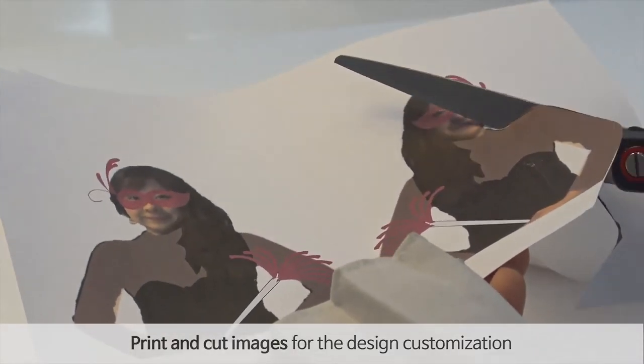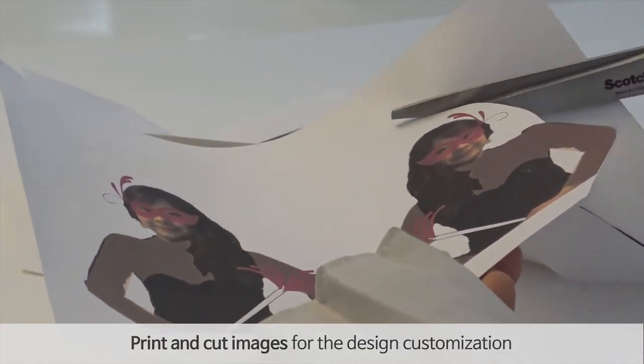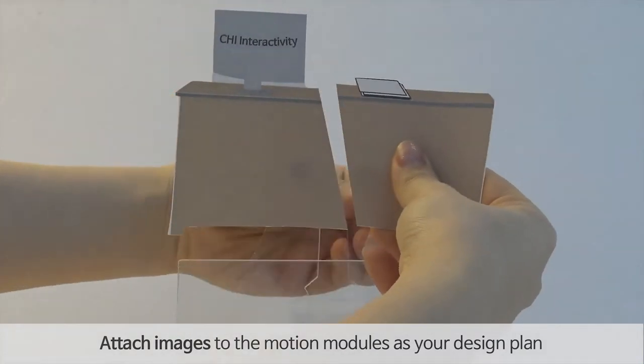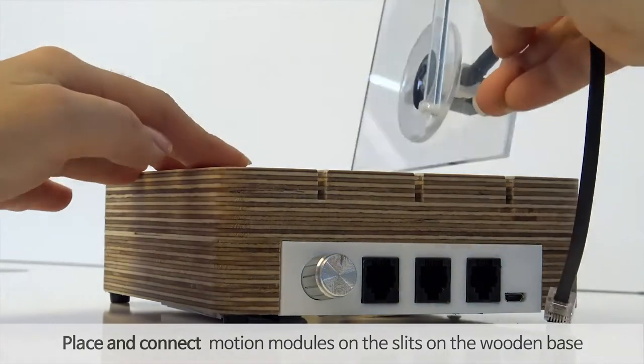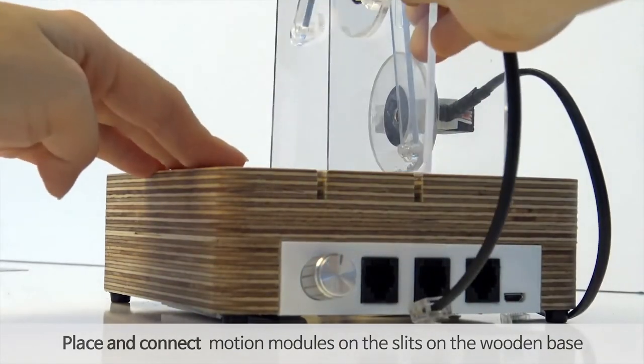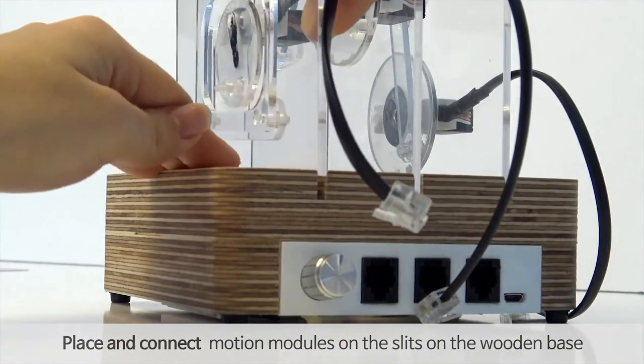After fixing the design, just print out and cut the images and attach them to the motion modules. Next, place and connect the motion modules onto the three slits on the wooden base to make compound motions.